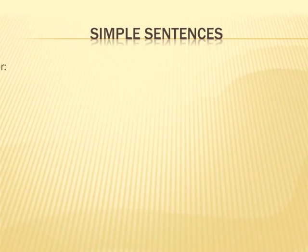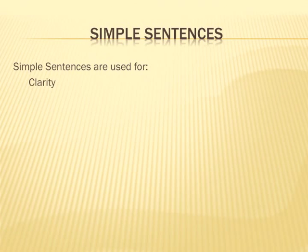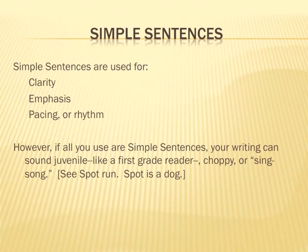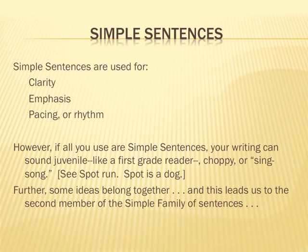There are many reasons to use simple sentences. They are very useful in the most elegant writing. They can be used for clarity, allowing the reader to focus on just one idea at a time. They can give emphasis — when using more complicated compound or complex sentences, suddenly shifting to a simple sentence gives it additional emphasis. Some writers vary the pacing or rhythm of how the reader moves through paragraphs by using simple sentences. However, if all you use are simple sentences, your writing can sound juvenile like a first-grade reader — choppy or sing-song. Think 'See Spot run. Spot is a dog.'